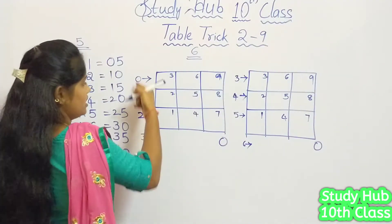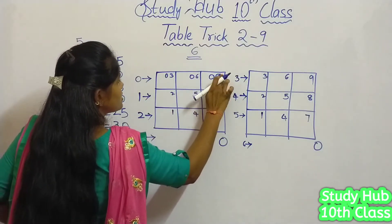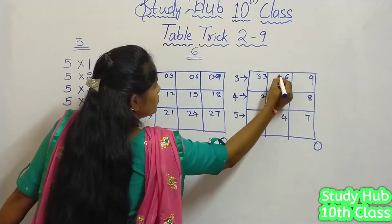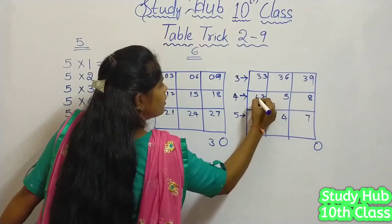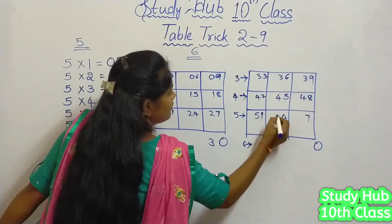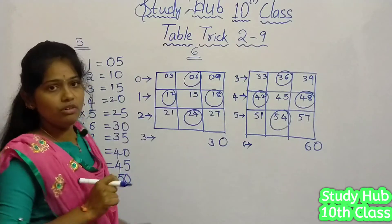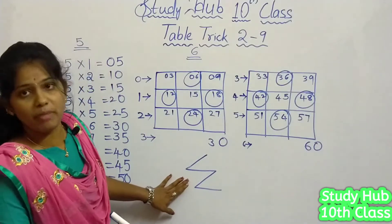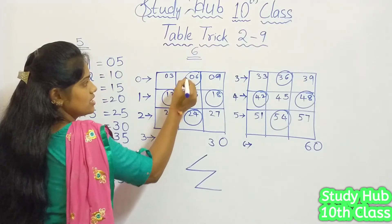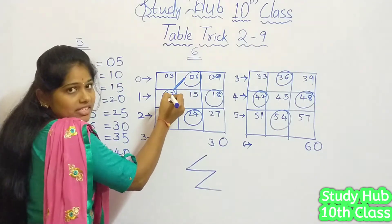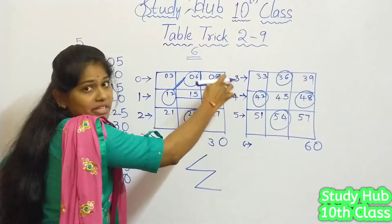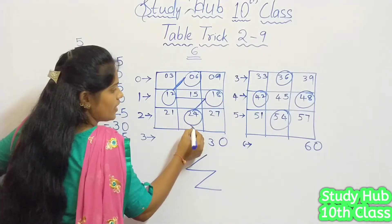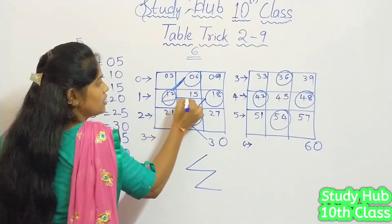So let us fill these tables: 0, 0, 0 for the first row; 1, 1, 1 for the second; 2, 2, 2 for the third; 3, 3, 3 continuing; 4, 4, 4; 5, 5, 5 and then 6. Now you have to follow a zigzag pattern — circling the middle numbers. So: 6 ones are 6, 6 twos are 12, 6 threes are 18, 6 fours are 24, 6 fives are 30, and you follow that zigzag.